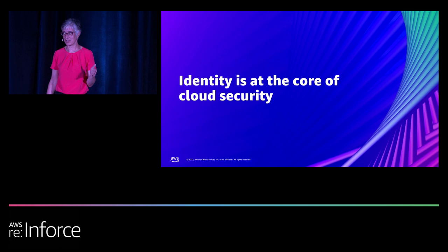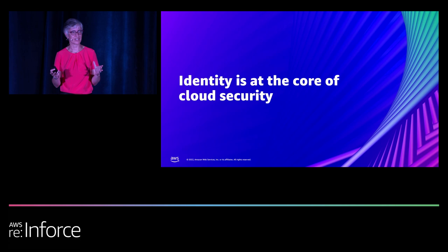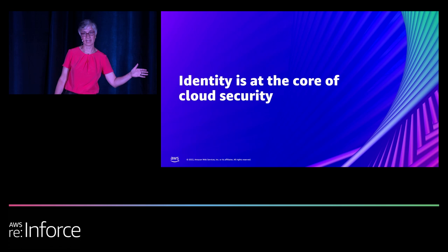He said: if you prevent your administrators from having access to critical corporate data, guess what? You've automatically prevented any attacker from getting access to that data, even if they happen to get access to your administrative credentials. So access controls and permissions address the prevent part of a cloud security model. But identity integrates with several other services in AWS's security portfolio to enable a complete cloud security model from prevent all the way through to detect and remediate.